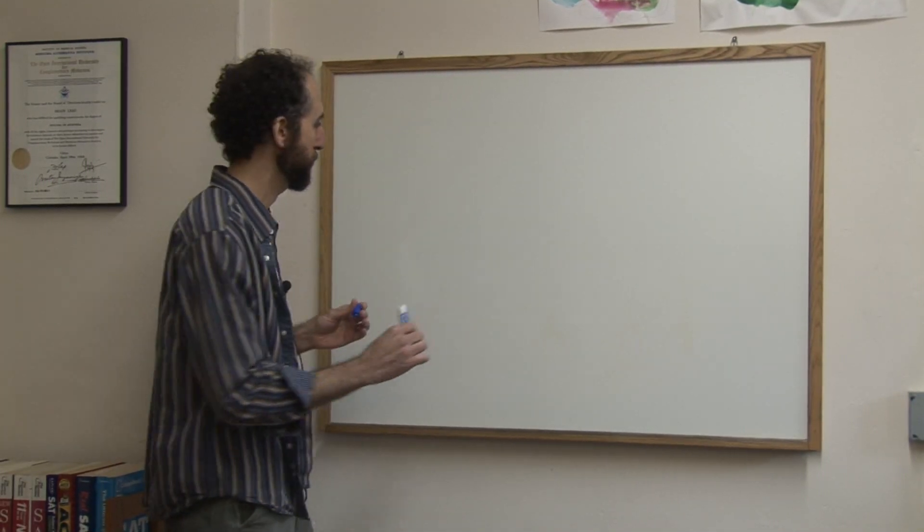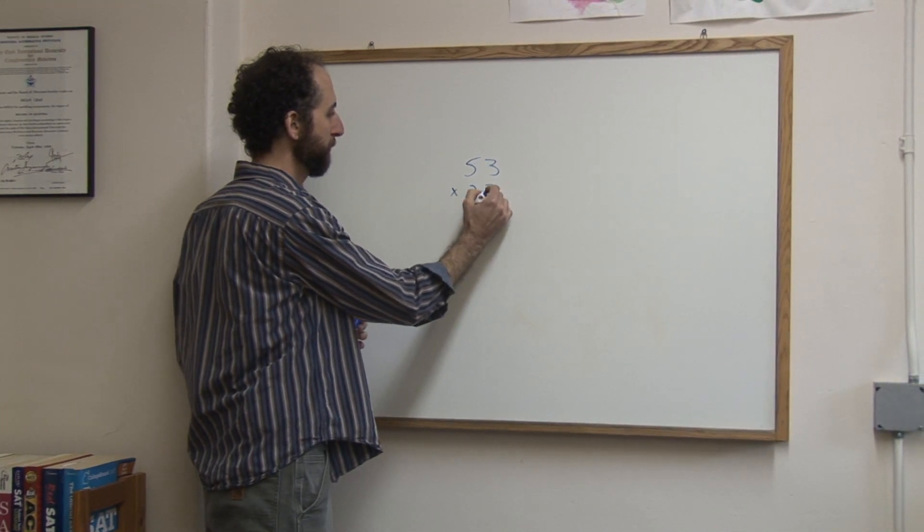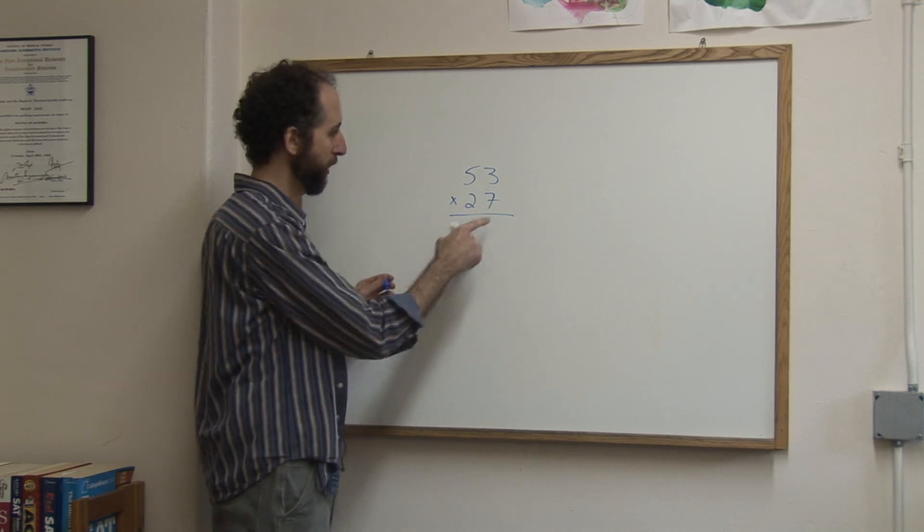Let's say you wanted to teach two-digit multiplication. Look at 53 times 27. You would take the first number and multiply it by each of these numbers and write it here.